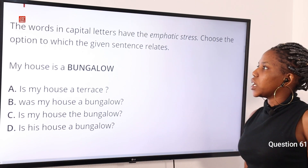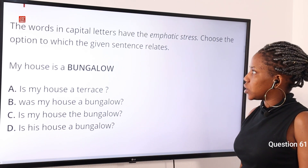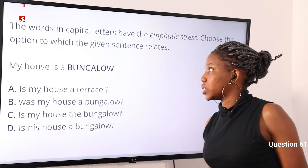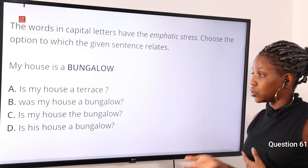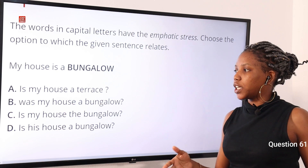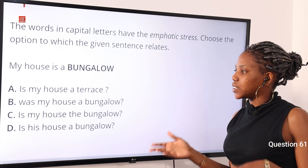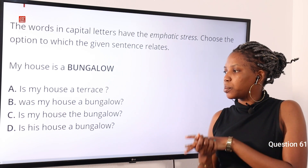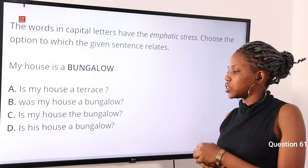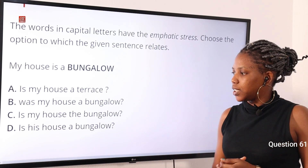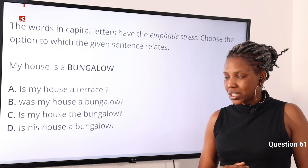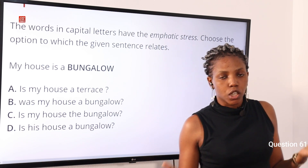The word in capital letter is the emphatic stress. Choose the option to which the given sentence relates. The sentence is: My house is a bungalow. Option A: is my house a terrace? Option B: was my house a bungalow? Option C: is my house the bungalow? Option D: is this house a bungalow? The answer to this question is option A.